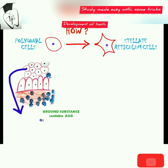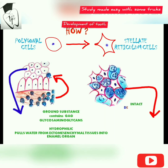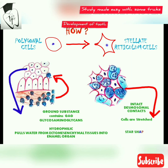Glycosaminoglycans are hydrophilic and they pull water from the ectomesenchymal tissues into the enamel organ. Water moves into the intercellular spaces in the enamel organ and stretches the cells. But there are intact desmosomal contacts, so the polygonal cells are stretched and appear star-shaped — that's why they are called stellate reticulum cells.